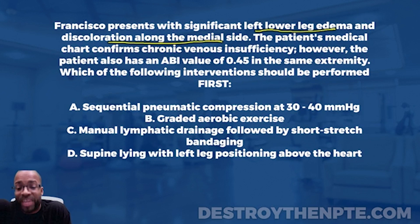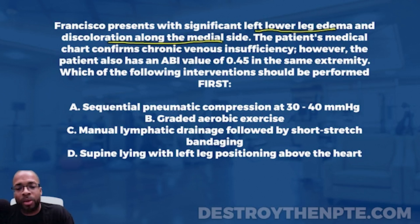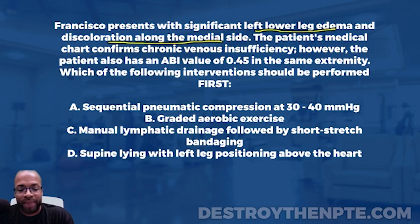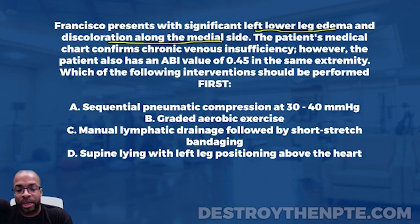So we have an ABI value of 0.45 — severe arterial insufficiency — and chronic venous insufficiency together. The question asks which intervention should be performed first. Let's knock down the answer choices: A) sequential pneumatic compression at 30 to 40 mmHg, B) graded aerobic exercise, C) manual lymphatic drainage followed by short stretch bandaging, and D) supine lying with left leg positioning above the heart.